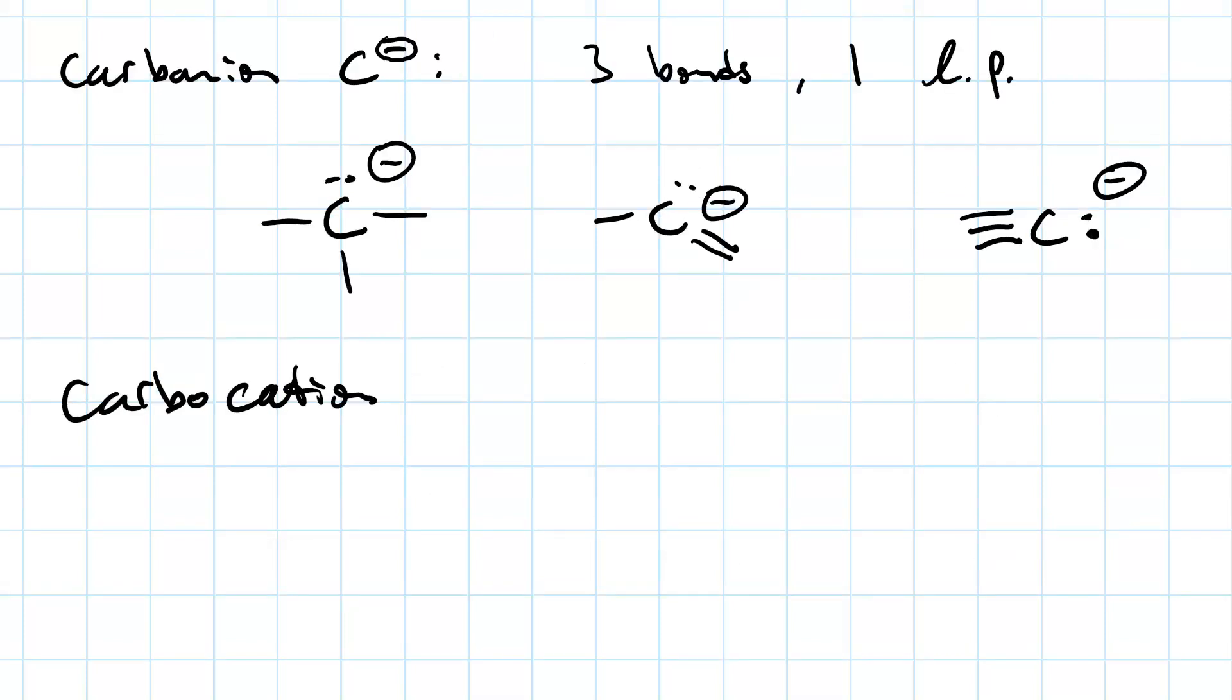A carbocation is a carbon with a plus one charge, and this is a carbon that has three single bonds and zero lone pairs, like this.